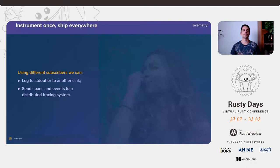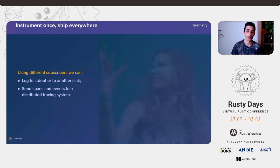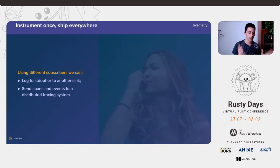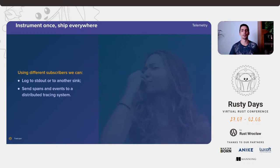Tracing, just like log and slog, is a facade pattern. You instrument your application using those macros and then you have subscribers — the ones that actually receive this tracing data and do something with it. Tracing can be used for structured logging; at this point in time it is the best crate for structured logging. You can log spans to standard out or to a file. At the same time, spans are exactly the concept used by distributed tracing. So one type of instrumentation — tracing — and you get both structured logging and distributed tracing, writing no extra code.